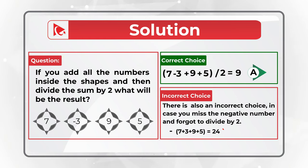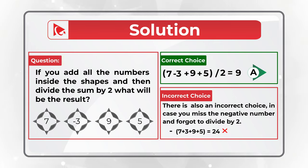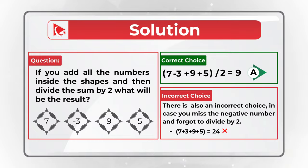What's interesting about this question is that there are a lot of ways to get to the incorrect answer. For example, if you forget to divide by 2, there is an answer for that. Also, if you don't see the negative number and forget to divide by 2, there is a choice for that as well. And if you just forget the negative number, there is a choice for that too. Which tells me that you have to read the instructions carefully.